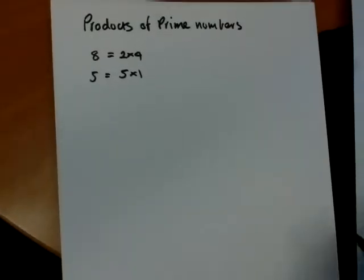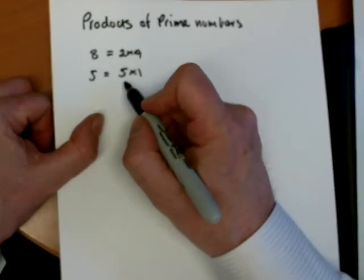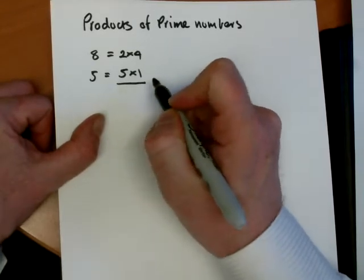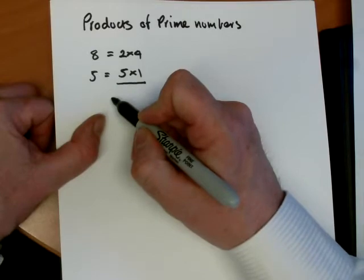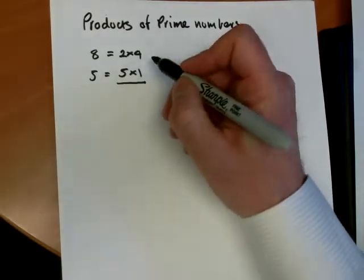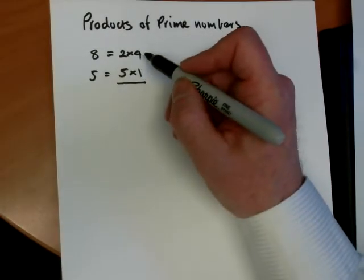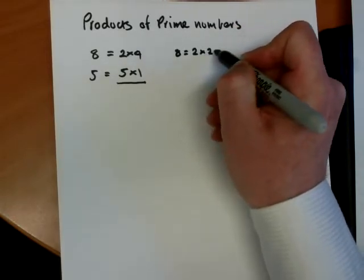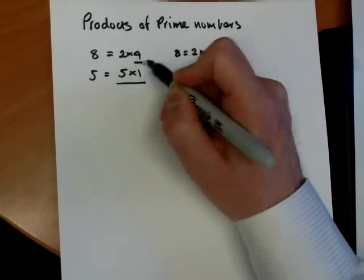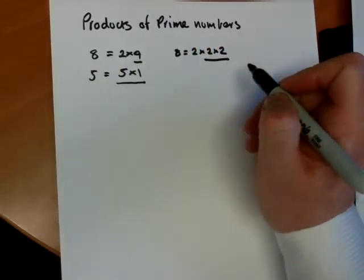Now, there's a difference between these two pairs. This is a product of prime numbers and it can't be broken down any further. You wouldn't want to keep writing 5 as 5 times 1. You're not learning anything extra there. But we can see that the 4 could be written as 2 times 2. I'll just underline the 4 changed into 2 times 2.